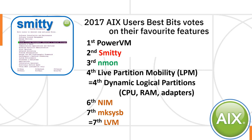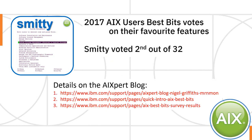Then we have some more core AIX features: NIM, Makes This Be, and the Logical Volume Manager — I'll be covering those in other videos. If you want to find out more about the full 32 best features of AIX and how the votes went, you can find it on my AIXpert blog. I'll put the URLs into the YouTube description for this video so you can click on them.